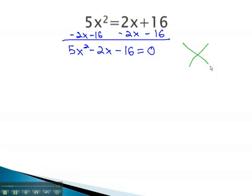We can now factor this using the AC method. 5 times negative 16 is negative 80, and adding to negative 2. We can do this with 10 and 8 if the 10 is negative.